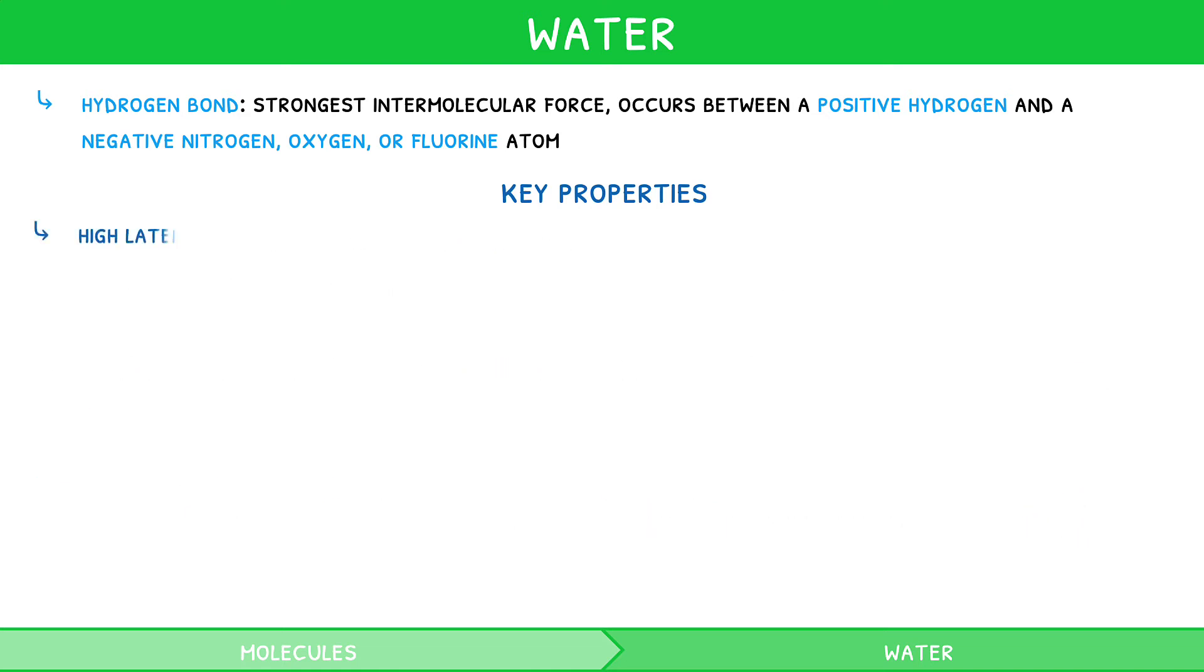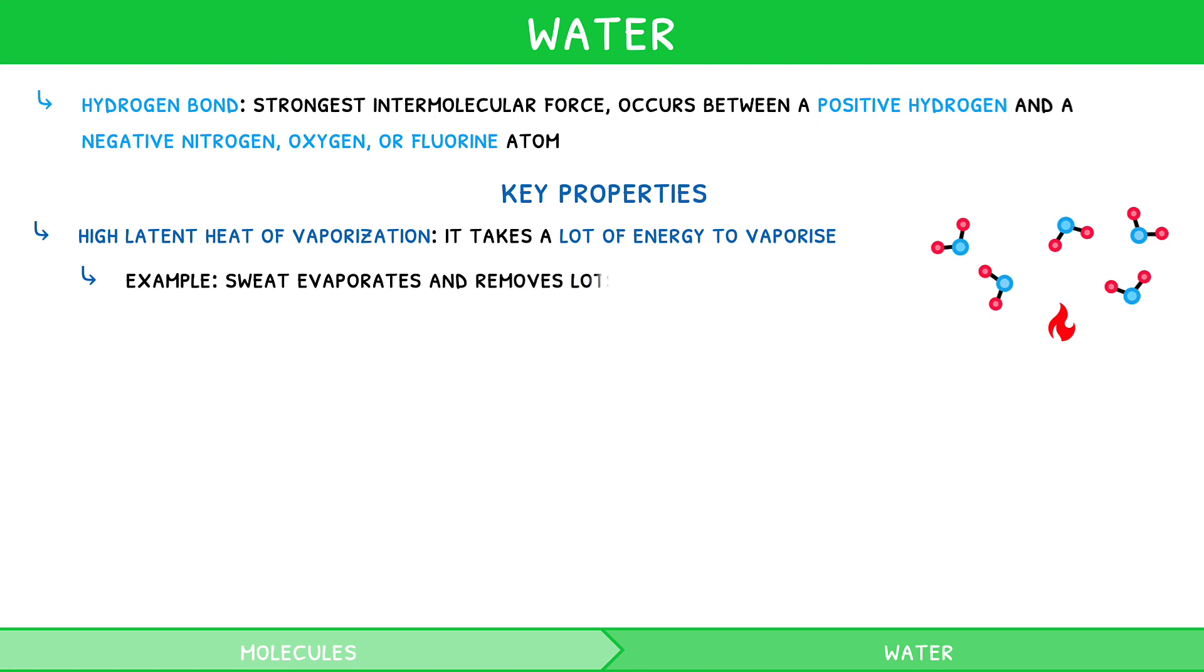Water has a high latent heat of vaporization. This means it takes a lot of energy to vaporize water. A principal use of this is water in the form of sweat, which evaporates and removes lots of energy, i.e. heat, in the process.